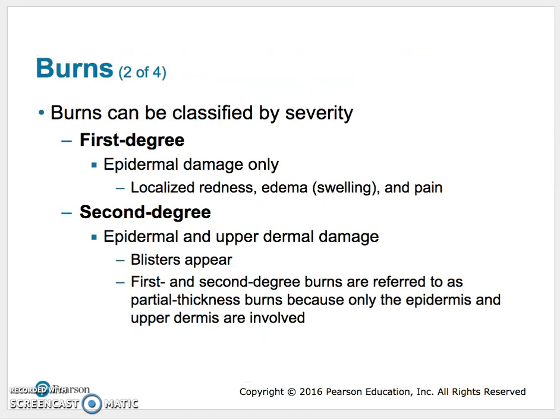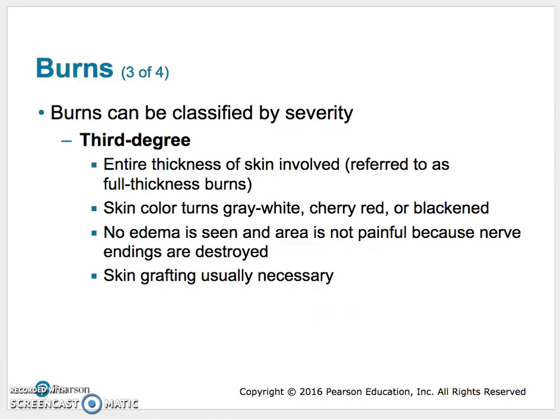First degree is just epidermal damage. You're going to get some redness, some swelling, some pain. Most sunburns are first-degree burns. Second-degree burns involve the epidermis and upper dermis — you see those blisters, and it's certainly painful. Third-degree burns involve the entire thickness of the skin. You get cherry red, grayish white, or blackened skin. There's not a lot of swelling because there's a lot of seepage going on, and there's not a lot of pain because you've burned out those receptors. Often skin grafts are necessary.